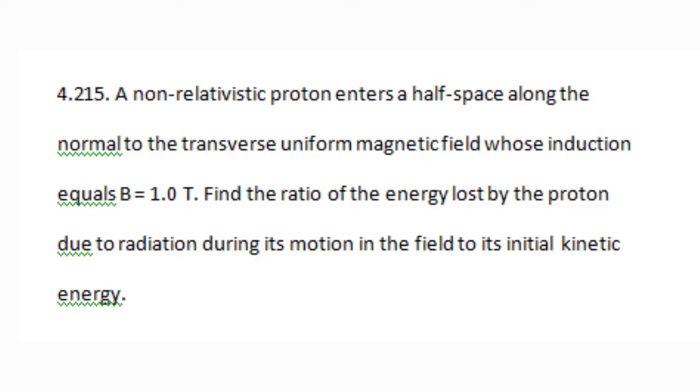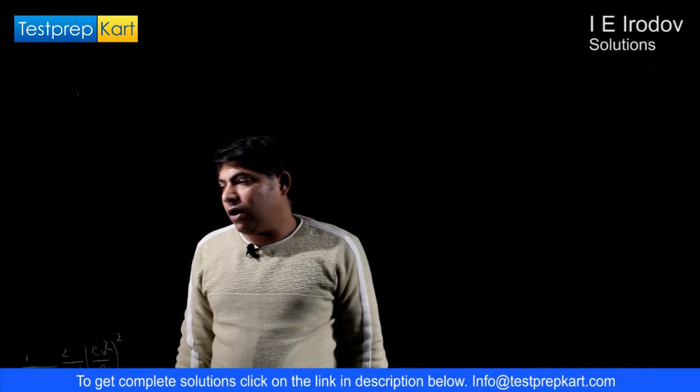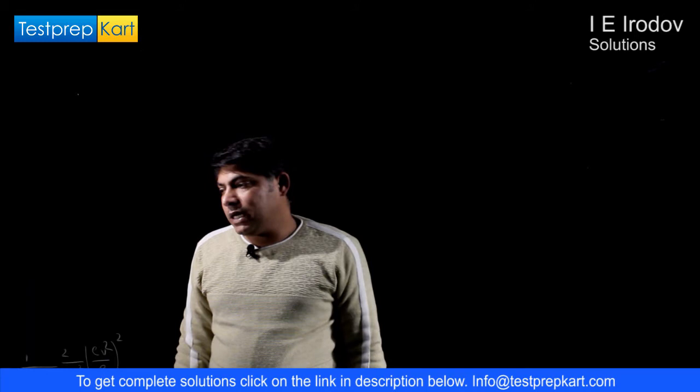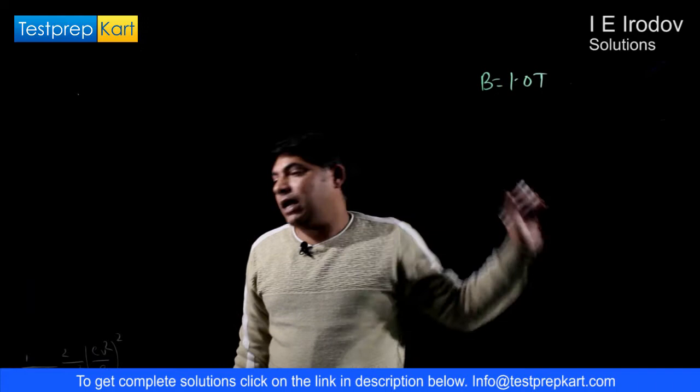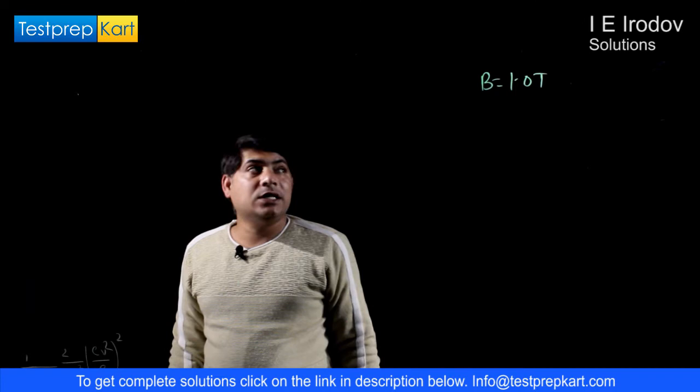Question 4.215: A non-relativistic proton enters in half space along the normal to the transverse uniform magnetic field whose induction B is equal to 1.0 Tesla. Find the ratio of energy lost by proton due to radiation during its motion in the field to its initial kinetic energy.